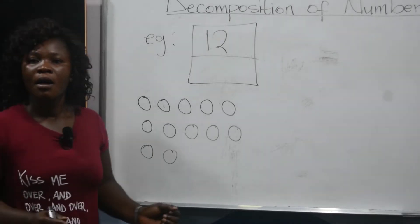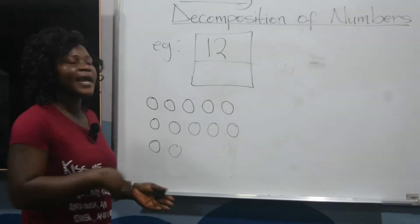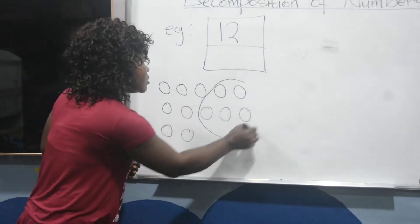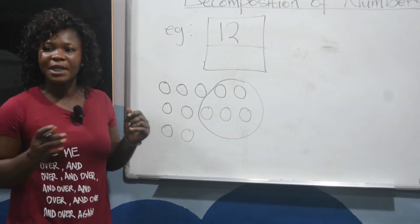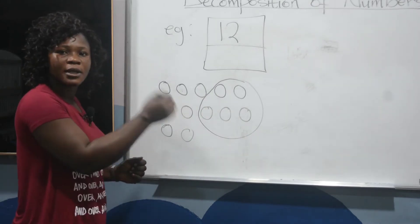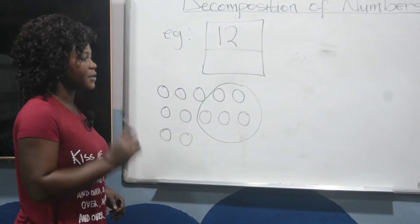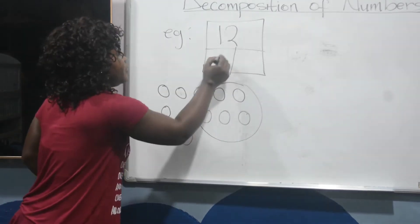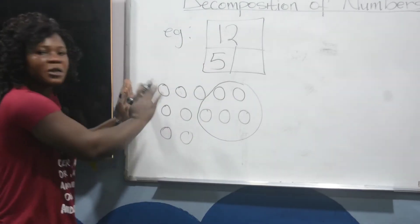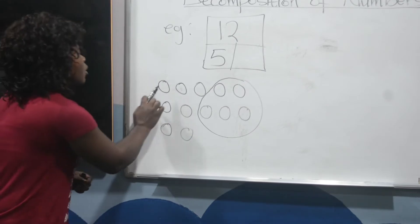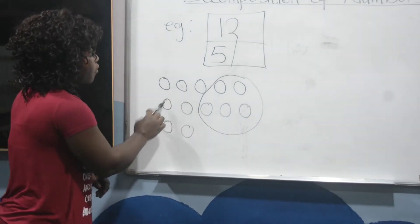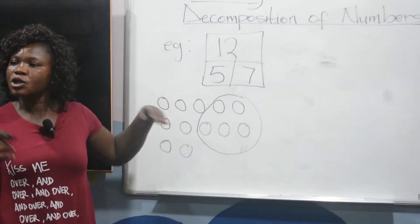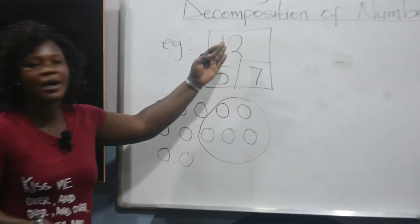Now, this is my 12. Anybody can choose to divide it however they want. I'll just circle some out of it. After I'm done, I'll count the ones in the circle. Let's count the ones I've circled: 1, 2, 3, 4, 5. I'll write my 5 here. Then the rest not being circled, let's count those: 1, 2, 3, 4, 5, 6, 7. So I get 7. With this, we know that 5 plus 7 gives us 12.